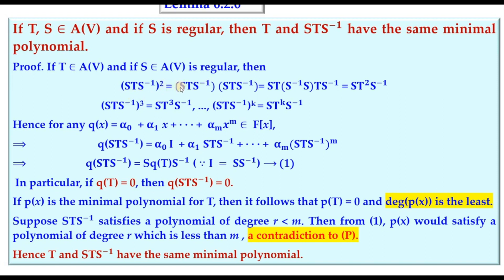Lemma 6.2.6 states: if T and S are two linear transformations of which S is regular, then T and STS⁻¹ have the same minimal polynomial. To see this, note that (STS⁻¹)² equals ST²S⁻¹, and (STS⁻¹)³ equals ST³S⁻¹, and so on. For a polynomial q(x), q(STS⁻¹) equals S·q(T)·S⁻¹, replacing the identity by SS⁻¹ throughout.